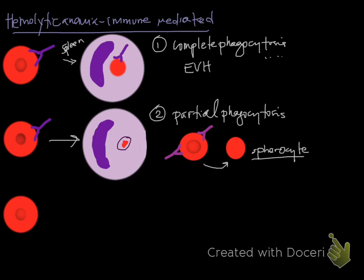Spherocytes tell us that an immune-mediated process is occurring. Within the blood you can see few to many spherocytes; we start thinking IMHA — immune-mediated hemolytic anemia — when we get into moderate to many spherocytes. Seeing only a few, you may question whether it's going on. This is another mechanism that tells you extravascular hemolysis is occurring. So overall you'll see anemia and spherocytes.